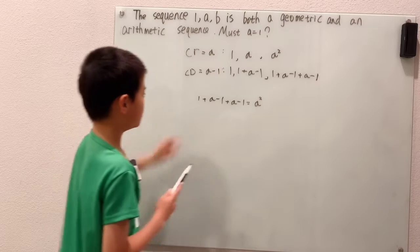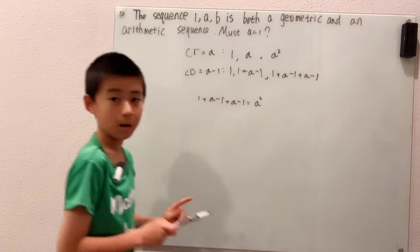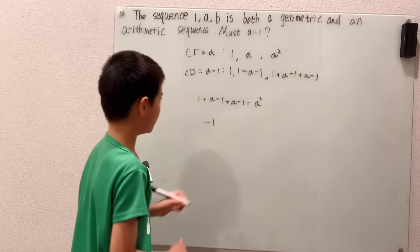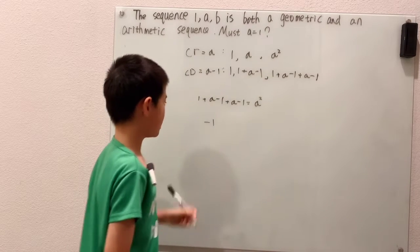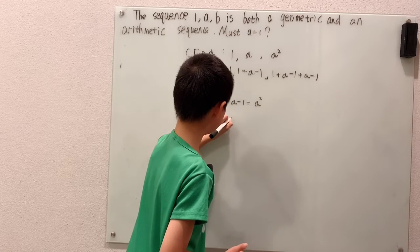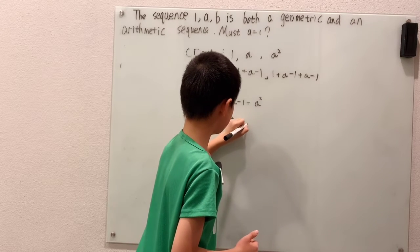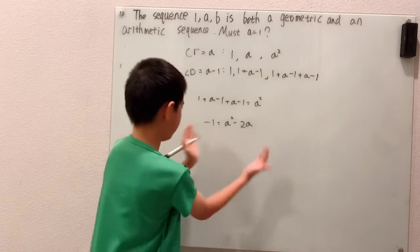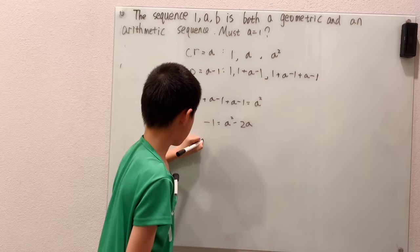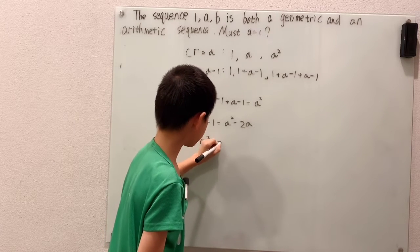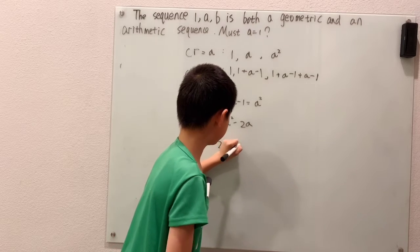Well, 1 minus 1 minus 1 again is negative 1, and a plus a is 2a. Subtract that over to get a squared minus 2a.